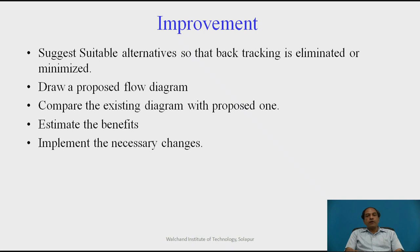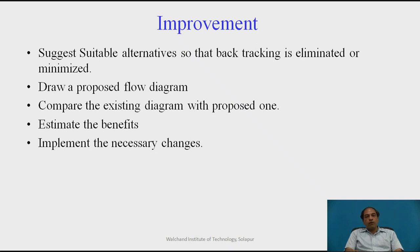Ergonomics will definitely help for improvements. Once this is done, we have to find out what possible changes are needed in the processes or in the layout. We have to work out the cost economics and estimate the benefits. If there are some investments, we have to calculate the ROI, considering the batch size of the equipment and the minimum return time. Generally, three to five years of return on investment is taken, with three years considered the best ROI.